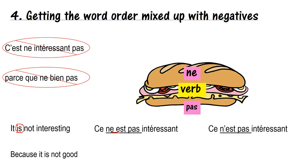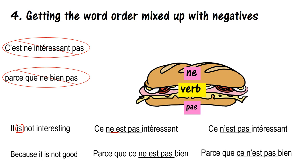Next: 'because it is not good.' It is ce; is is est, the same verb. Est goes in the middle of ne and pas. Good is bien. So: 'parce que ce ne est pas bien.' But once again that sounds clunky — we need to make it flow: 'parce que ce n'est pas bien.'